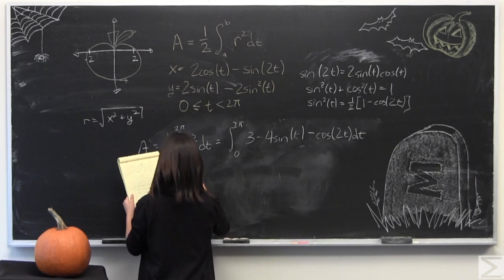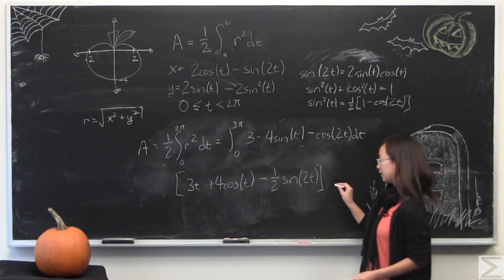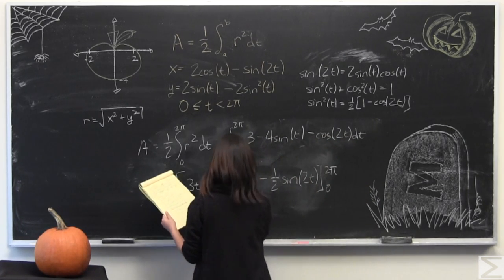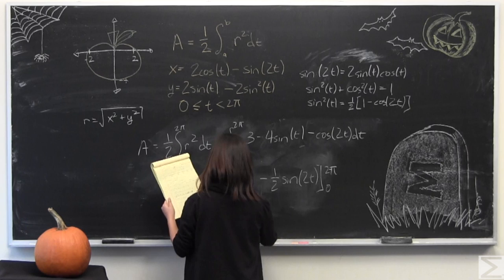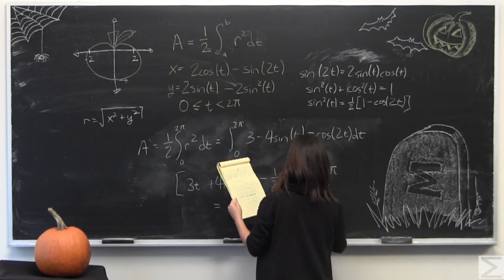It is simply you're going to evaluate it from zero to 2π and when you do so you're very simply going to get 6π plus 4 minus 4 which is just equal to 6π.